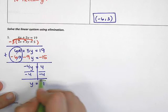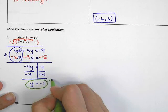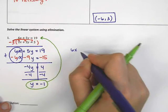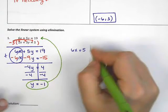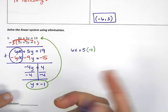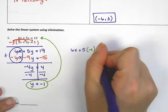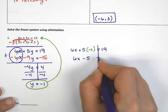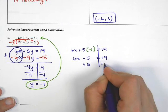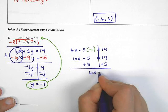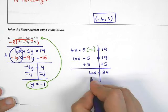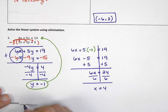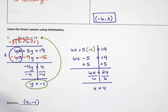From here, I'm going to take the negative 1, plug it into the original problem, and solve for x. So I have 6x plus 5 times negative 1 equals 19. 5 times negative 1 is negative 5. I add 5 on both sides, so 6x equals 24. Dividing by 6 on both sides gives x equals 4. My final answer is 4, negative 1.